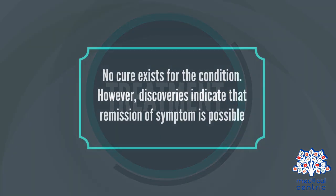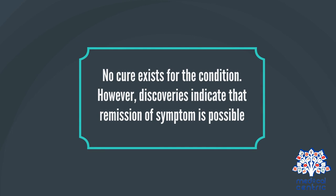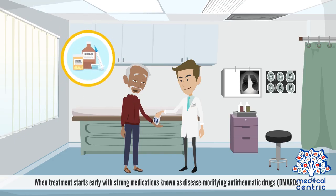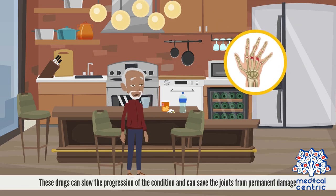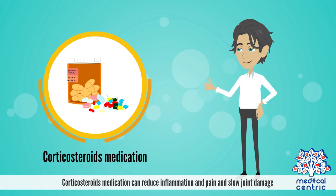No cure exists for the condition. However, discoveries indicate that remission of symptoms is possible when treatment starts early with strong medications known as disease-modifying anti-rheumatic drugs, or DMARDs. These drugs can slow the progression of the condition and can save the joints from permanent damage. Corticosteroids medication can reduce inflammation and pain, and slow joint damage.